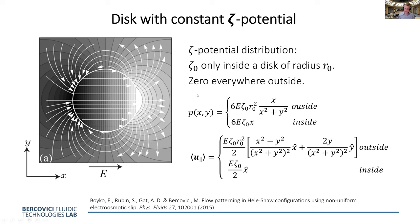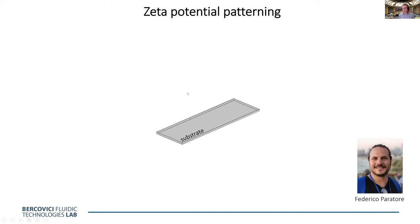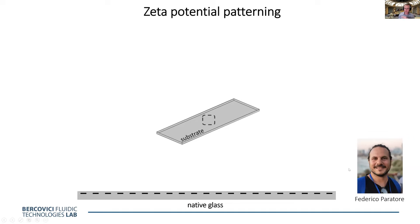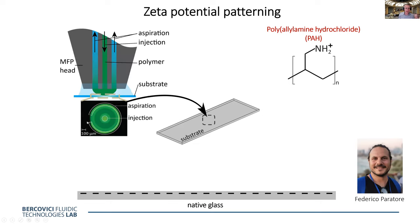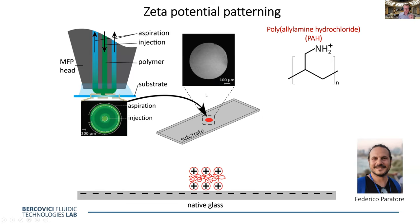Our first implementation to validate the theory used chemical patterning — work by Federico Paratore, now at ETH. He took a glass slide and patterned it with a positive polyelectrolyte (PAH) in a circle, using the microfluidic probe developed at IBM Zurich to write it precisely. The rest of the surface was coated with PLL-PEG to make it as neutral as possible, approximating our model.